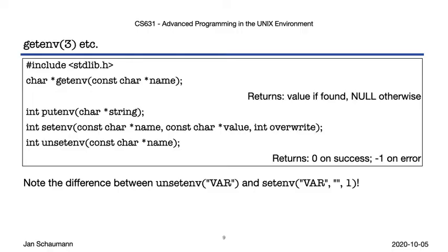How do we access the environment or manipulate it? For that, we have the getenv, setenv, putenv, and unsetenv library functions. Getenv retrieves a value, putenv adds a new value, setenv can be used to change a given value, and unsetenv removes the value from the environment. Note that there is a difference between setting a variable to the empty string and removing it from the environment completely. Some tools may only test for the existence of a variable, not for any specific value, and a variable with no value still counts as being set.